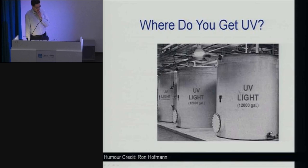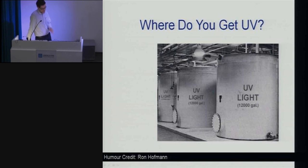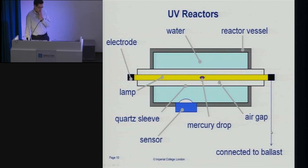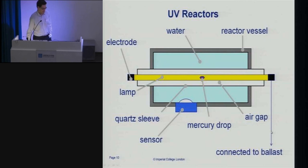So where do you get UV from? It comes in big gallon drums like this — I'm glad some people are smiling. It does not come in big UV drums. It comes from a variety of different sources. This graph is a very simplified diagram of how you make a UV reactor — and it's not just a lamp in a box which you plug in.